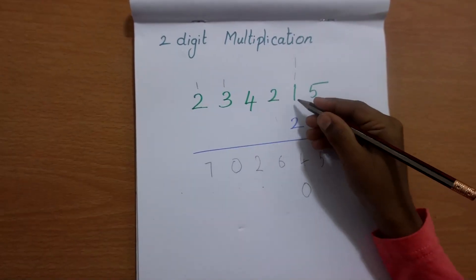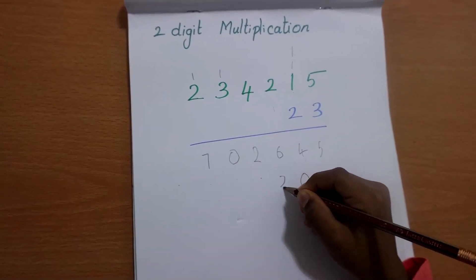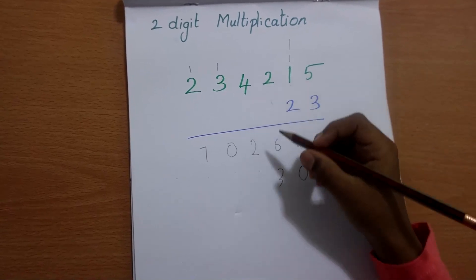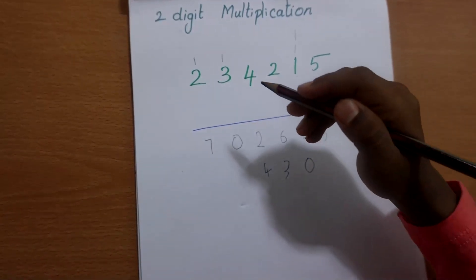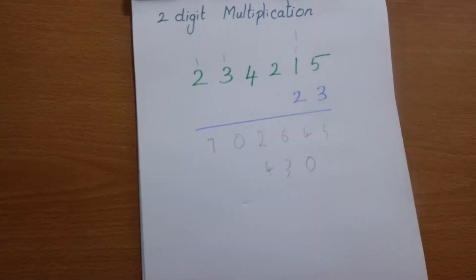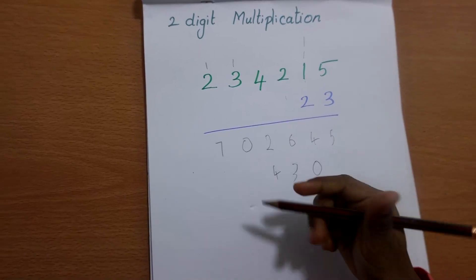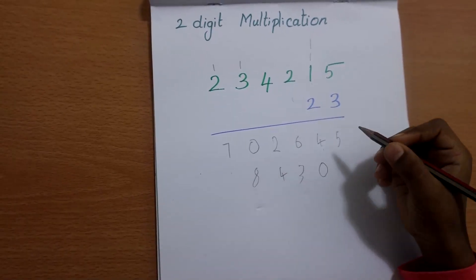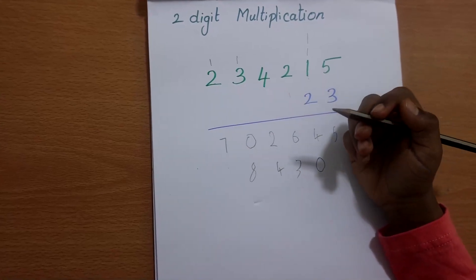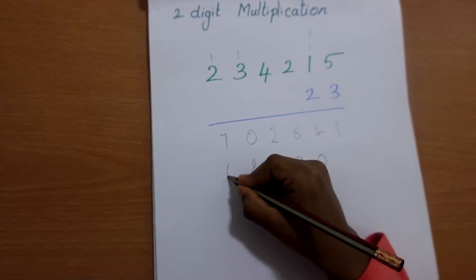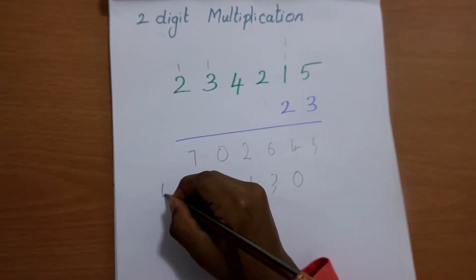2 times of 1 is 2, that's 3. 2 times of 2 is 4. 2 times of 3, then 2 times of 2 is 4.